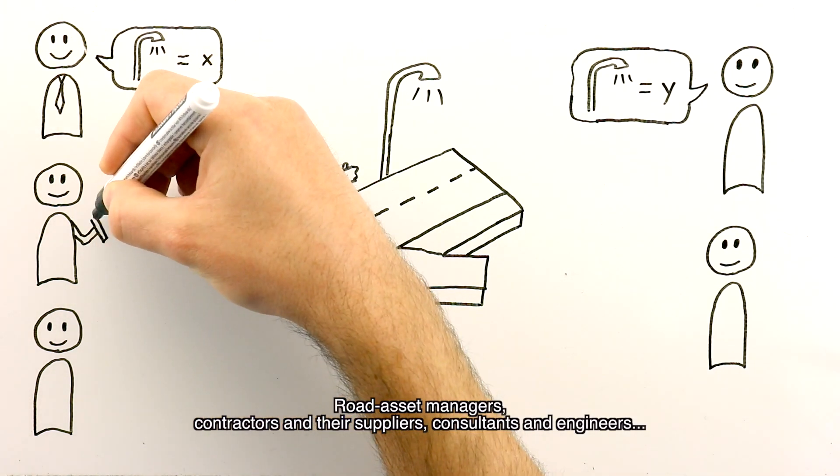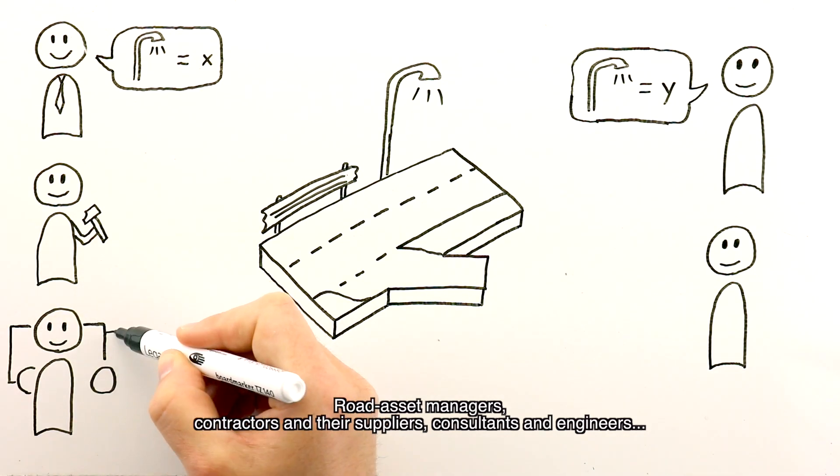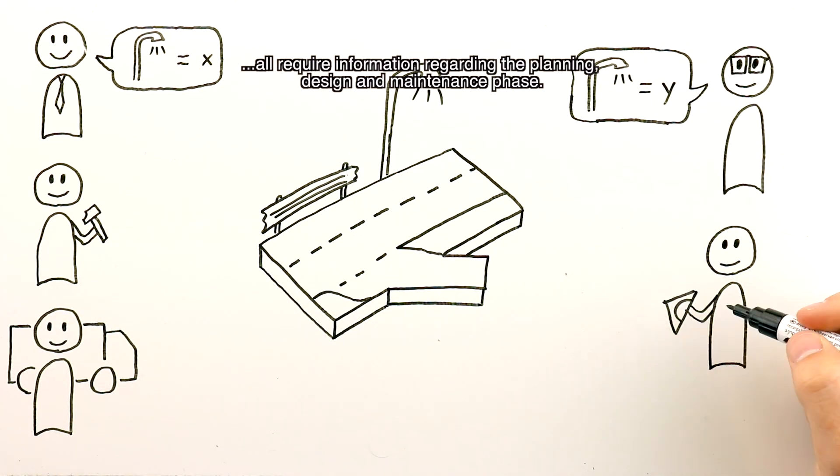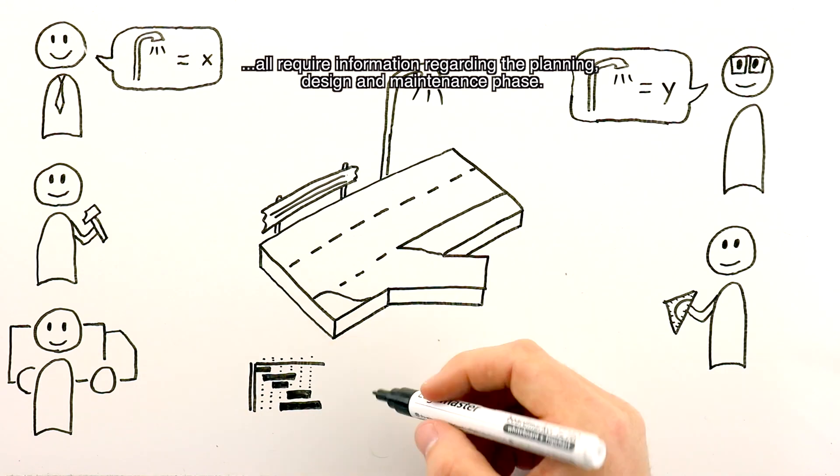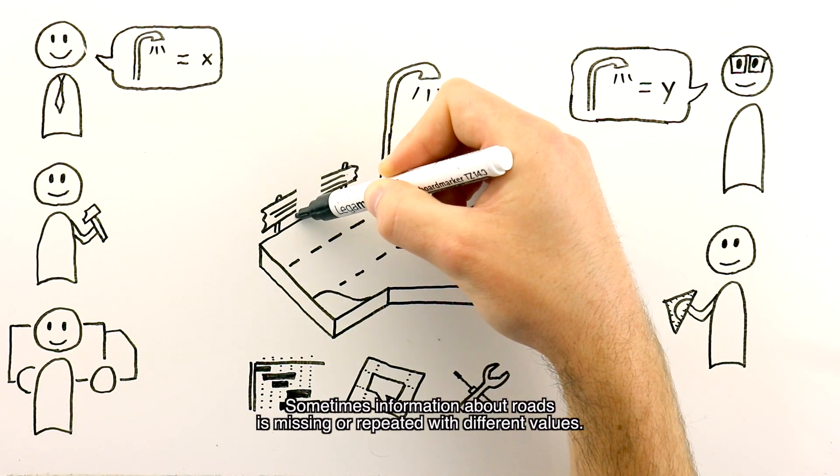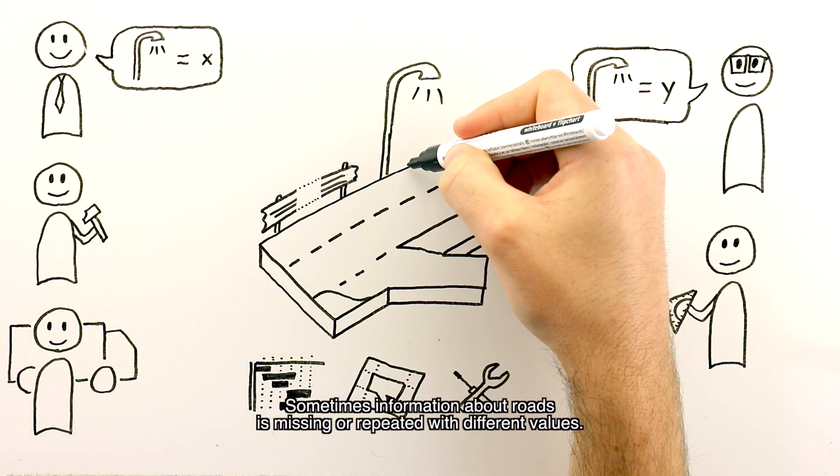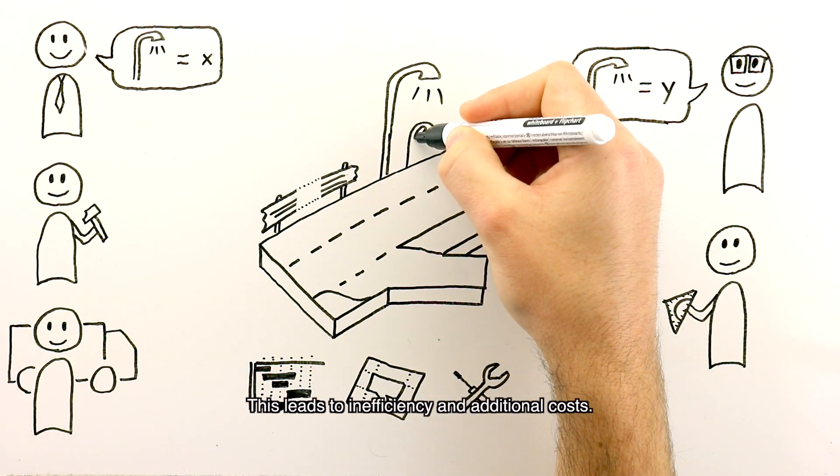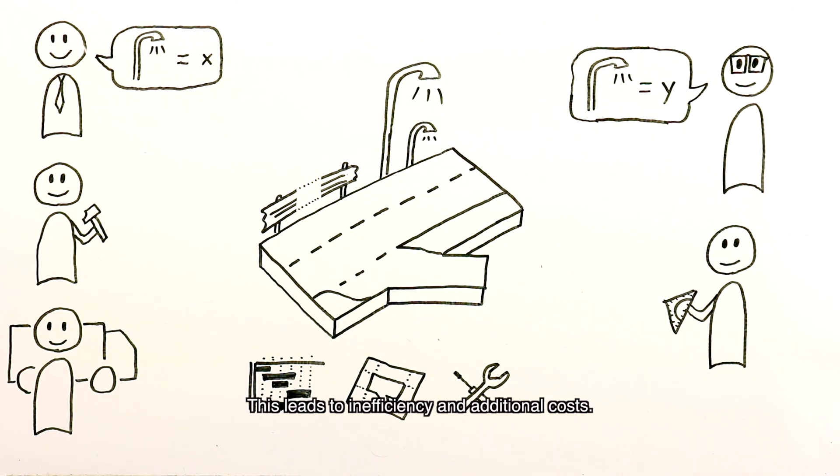Road asset managers, contractors and their suppliers, consultants and engineers all require information regarding the planning, design and maintenance phase. Sometimes information about roads is missing or repeated with different values. This leads to inefficiency and additional costs.